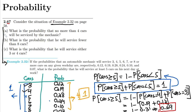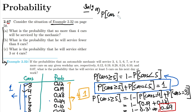Now, let me solve different parts of question 2.67. The first part asks: what is the probability that no more than 4 cars will be served by the mechanic? This is part A. I have to find the probability that the number of cars served is less than or equal to 4.